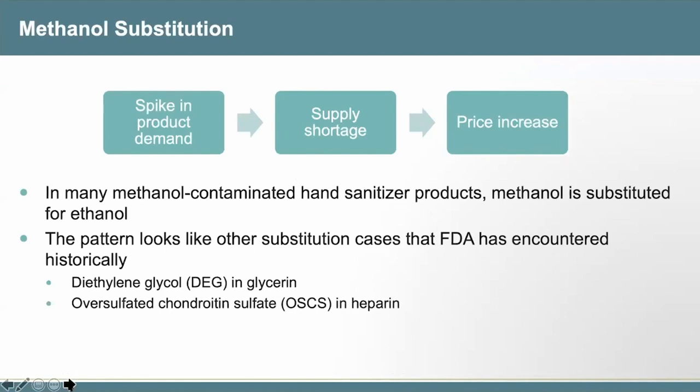During the COVID-19 pandemic, we have experienced a spike in demand for ethanol with subsequent supply shortages and increases in price. In many methanol-contaminated hand sanitizers, less expensive methanol is substituted for more expensive ethanol. The pattern looks like other substitution cases FDA has encountered historically, such as diethylene glycol in glycerin and oversulfated chondroitin sulfate in heparin.